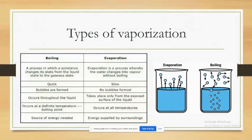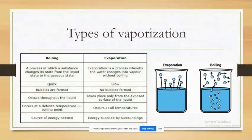Boiling is a bulk phenomenon and evaporation is a surface phenomenon. Boiling occurs at a definite temperature and evaporation occurs at all temperatures. An external source of energy is needed for boiling, whereas the surrounding provides the energy for evaporation.